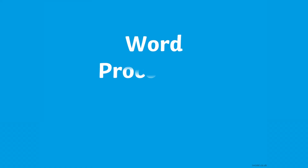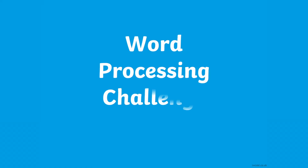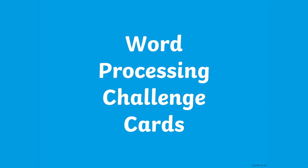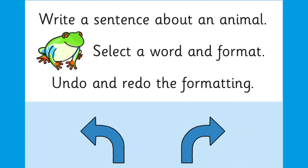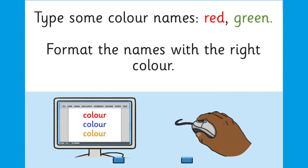Our word processing challenge cards are a fantastic way to really check that your child has embedded each concept. For example, this card looks at how to use the bold, italic, and underline options. This card looks at how to undo and redo formatting. And this card looks at how you can format text using color.